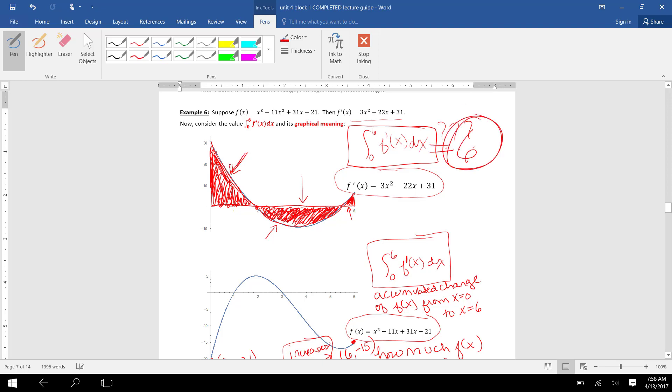Remember, this area up here will be positive. We're going to count this area down here as negative because it's below the x axis. And then we also add in this little bitty area here, which will be positive. And if we could find a method for finding those areas, they would all add up to 6.